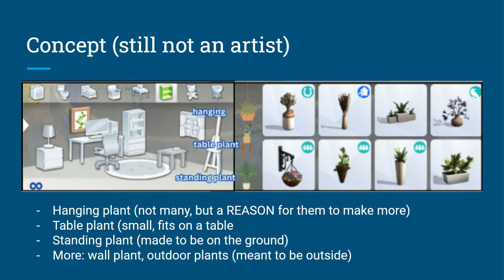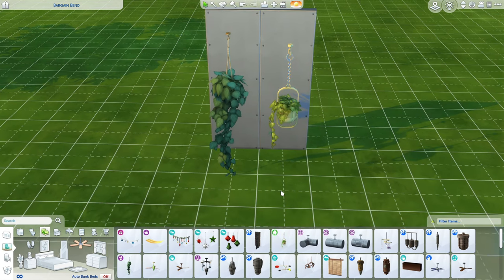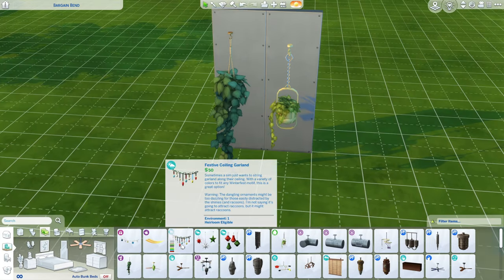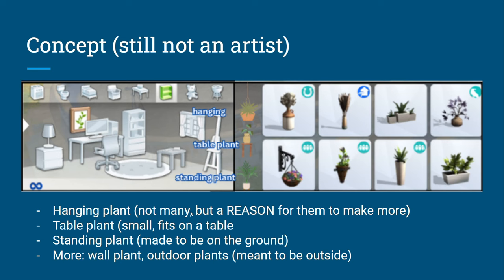Next up I was thinking about plants. I have a picture here showing hanging plant, table plant, and standing plant. We don't have that many hanging plants, but making a category gives them a reason to add more. I believe there are only two hanging plants: one from the Blooming Rooms kit and one from Paranormal. They do show up under ceiling decorations, and if you turn on debug you'll also get the Nifty Knitting plants.